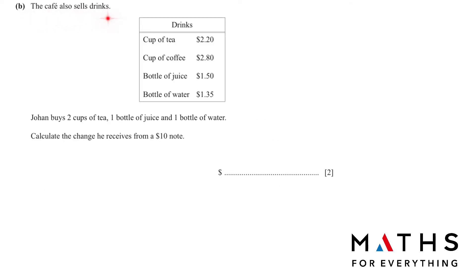Part B, the cafe also sells drinks. Here the menu card is given and the cost of tea, coffee, bottle of juice, and water is given. Johan buys two cups of tea, so 2.20 multiply by two we will get 4.4, one bottle of juice is 1.5, and one bottle of water is 1.35. We add it together, we have the total cost 7.25. Calculate the change he receives from a 10 dollar note. So he has a 10 dollar note and from that he spent 7.25, so we minus it. Therefore the balance is going to be 2.75 dollars.